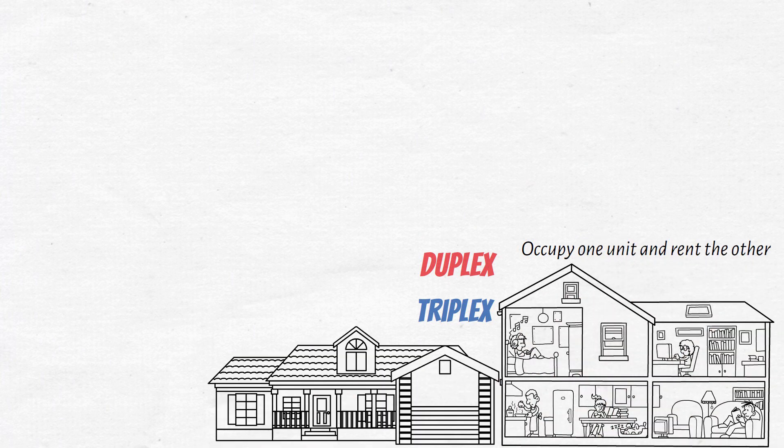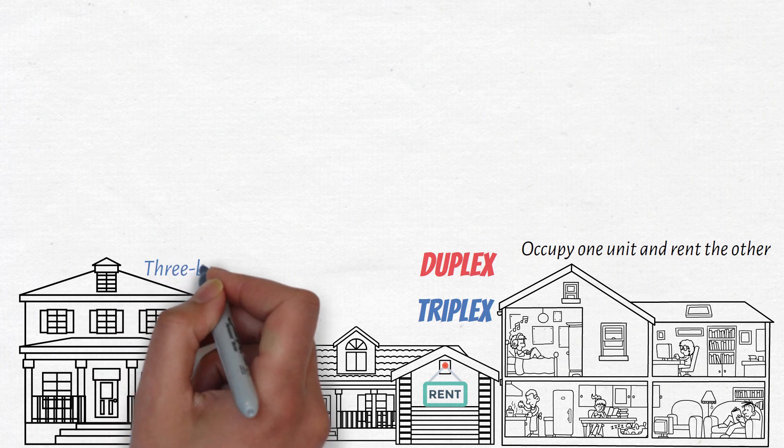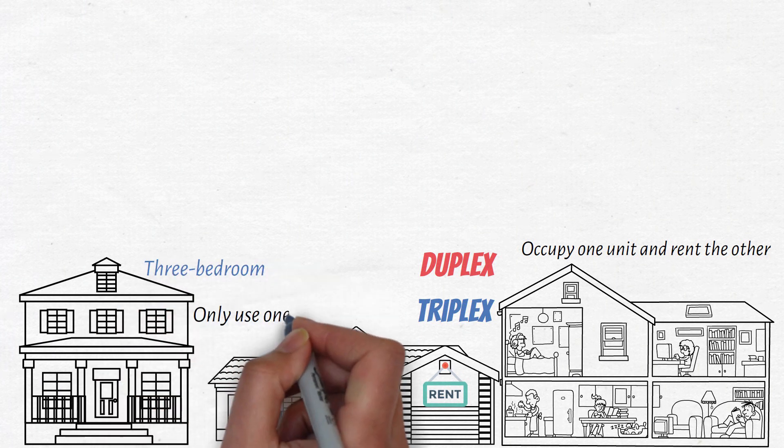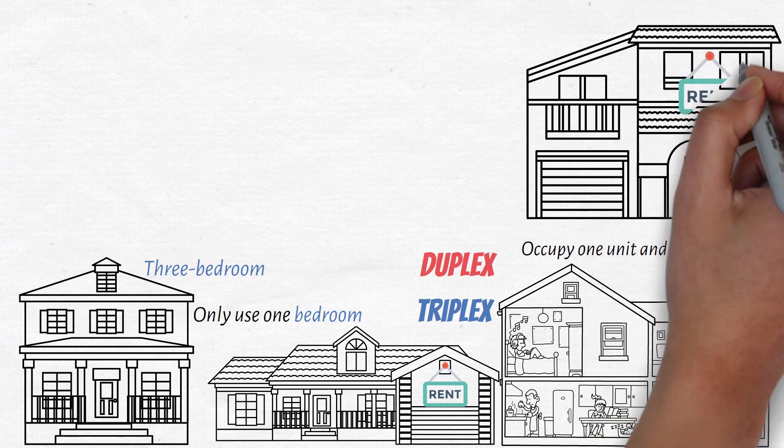If you don't want the hassle of owning a multifamily home, you can simply rent out any extra rooms inside your single-family home. For example, if you have a three-bedroom place and only use one bedroom, the other bedrooms could be rented individually either long-term or short-term.